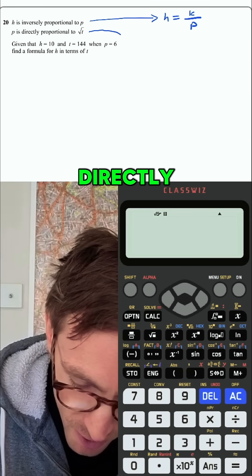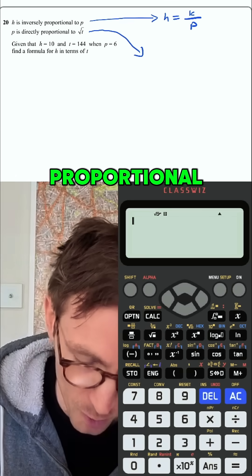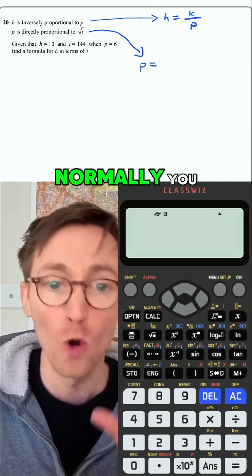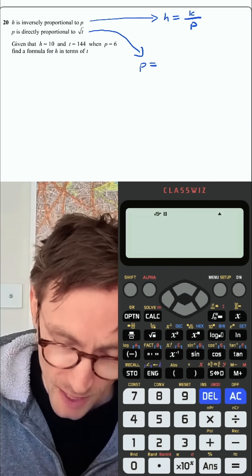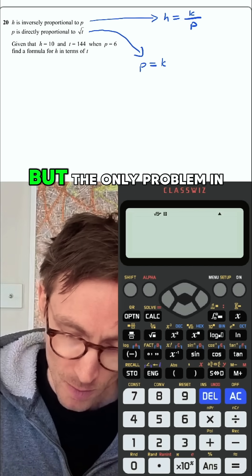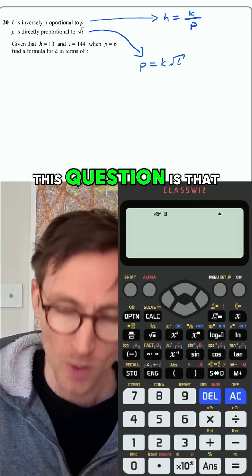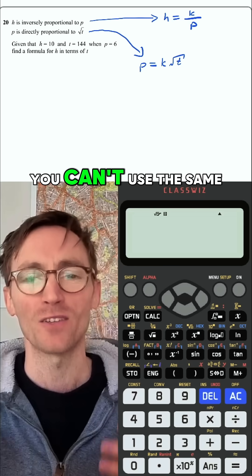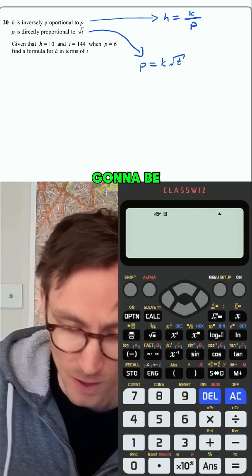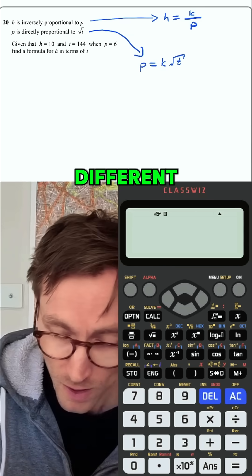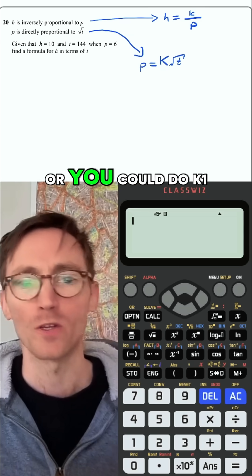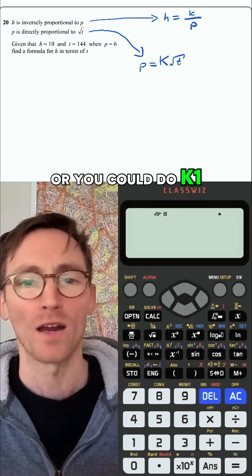And if p is directly proportional to something, you would say p equals — normally you'd just write k times whatever that is. The only problem in this question is that you can't use the same letter k twice because this number is going to be different. So you can call it capital K, or k1 and k2.